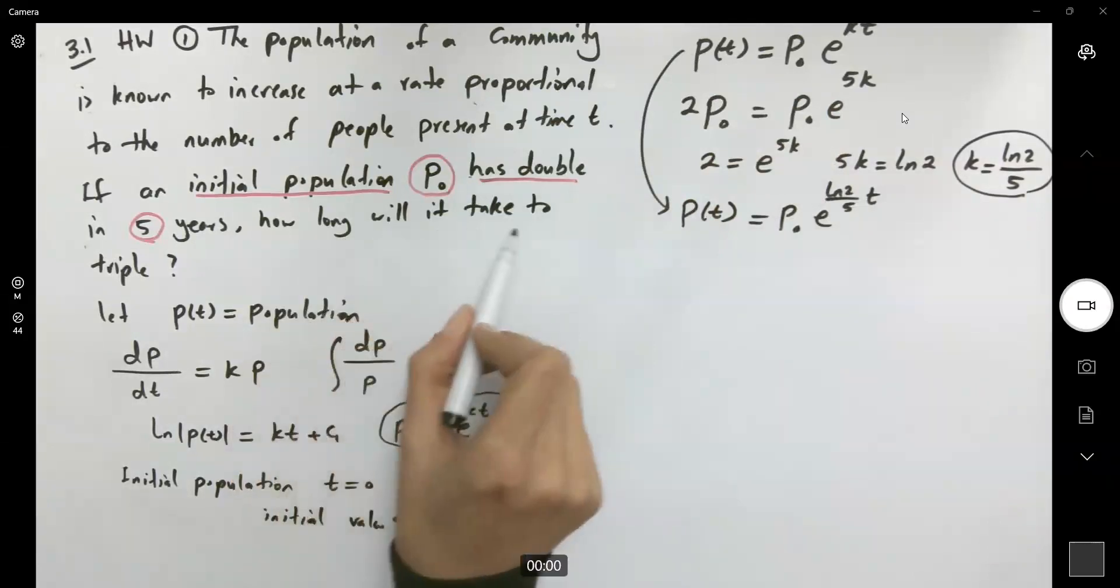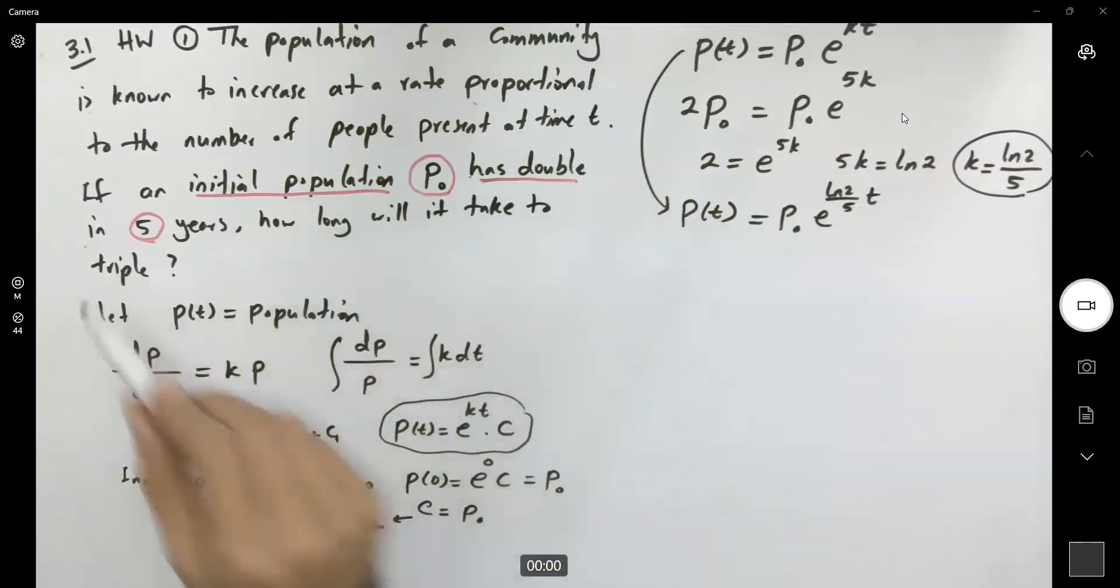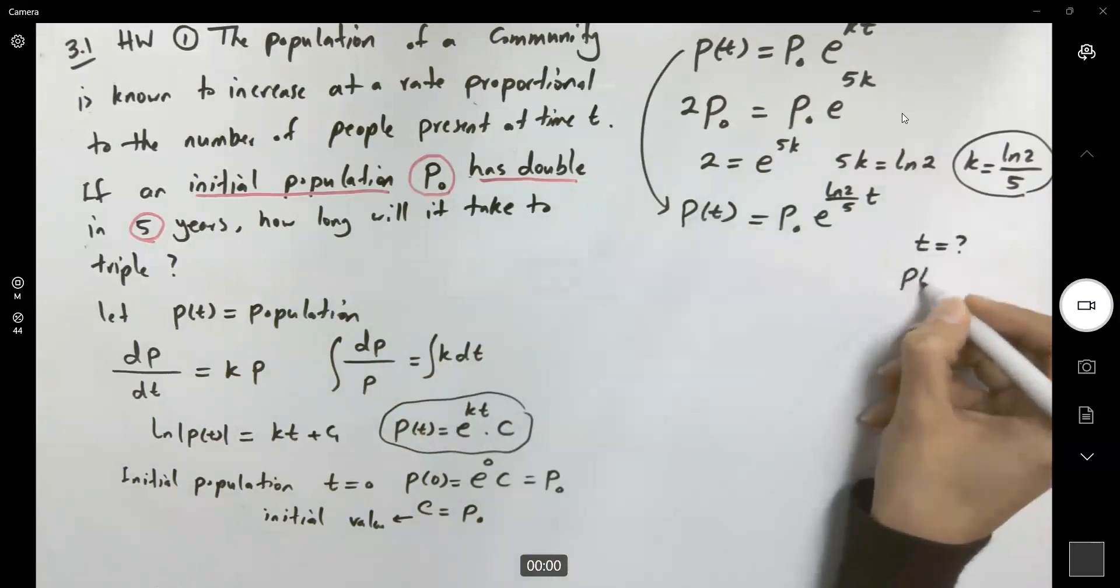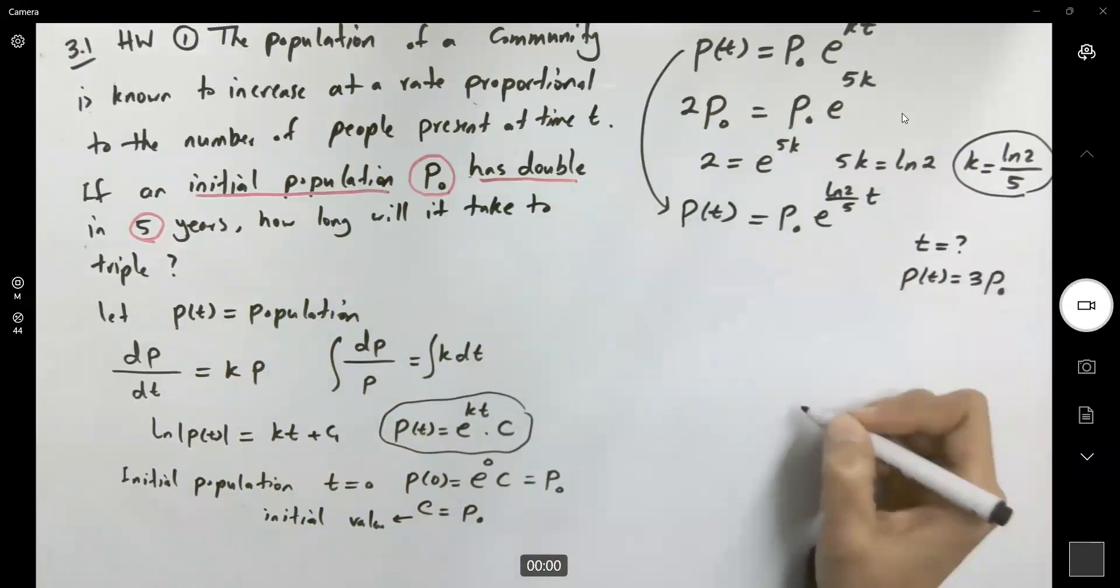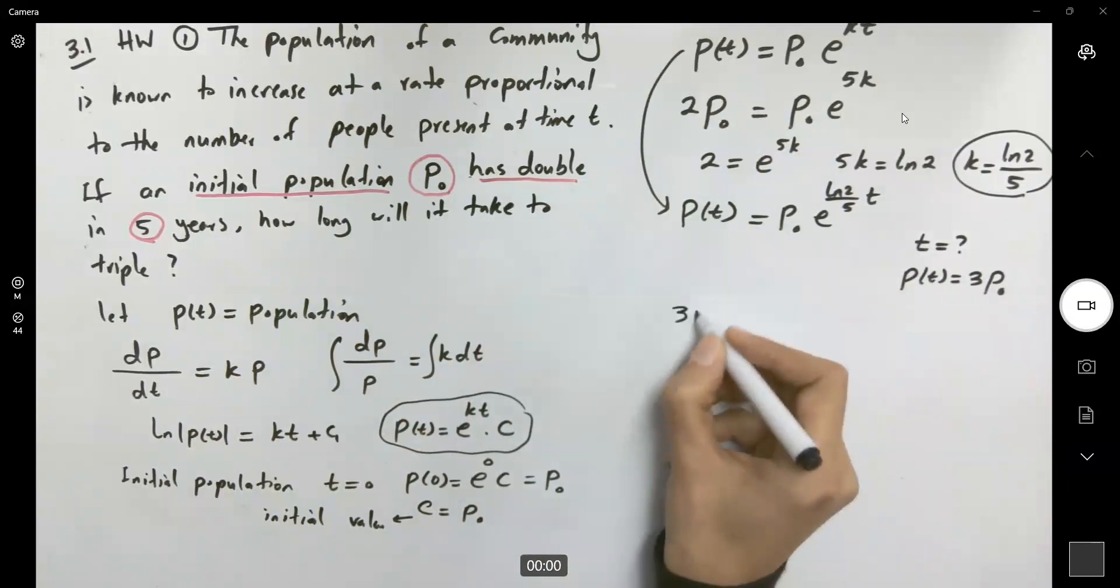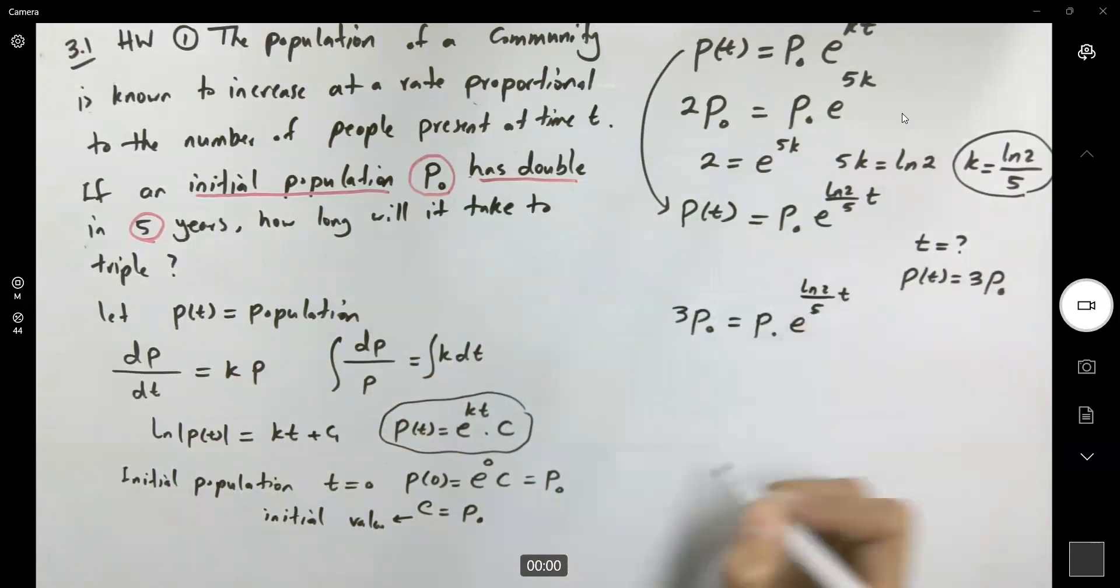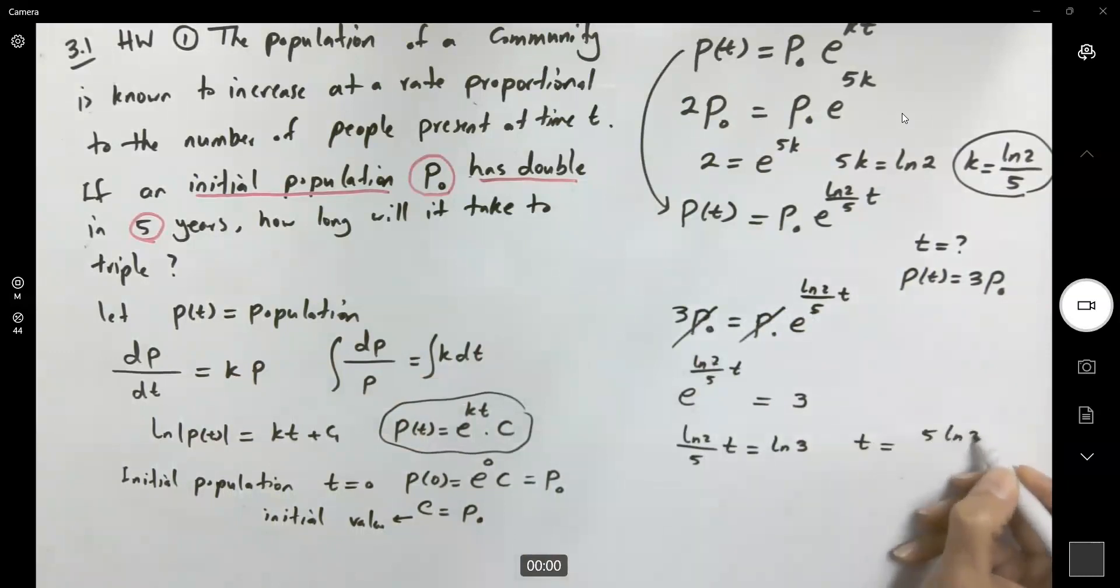We want to know how long it will take for the population to triple, so p(t) = 3p₀. Substituting: 3p₀ = p₀e^[(ln(2)/5)t]. Canceling p₀ from both sides: e^[(ln(2)/5)t] = 3. Therefore, (ln(2)/5)t = ln(3), so t = 5ln(3)/ln(2).